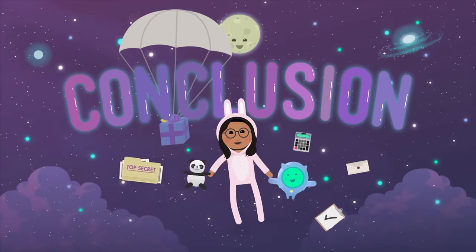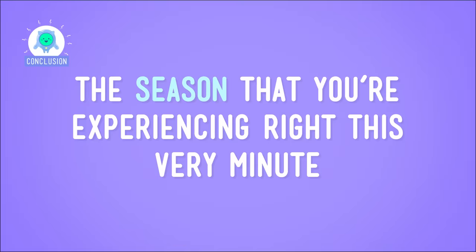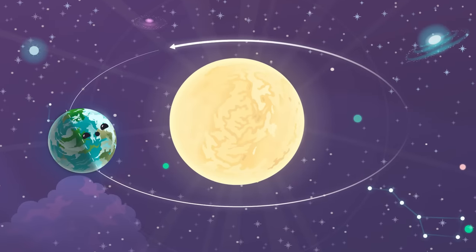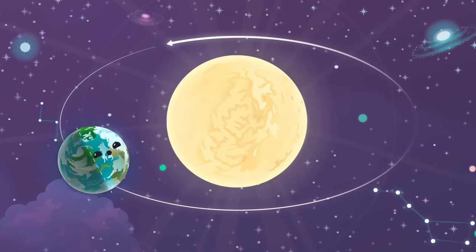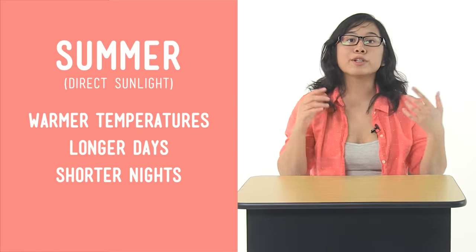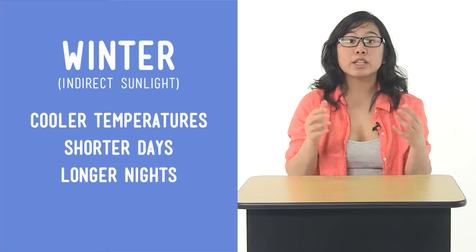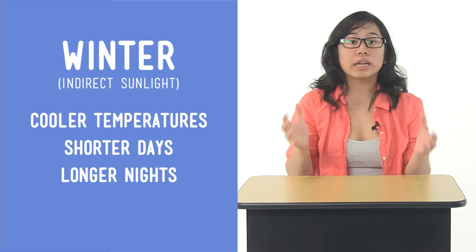Proof positive that something is going on here — and that something is this: the season you're experiencing right this very minute is caused in part by the amount of direct sunlight you're getting. Seasons are caused by the Earth's tilt on its axis as it cruises around the sun in its orbit. When one hemisphere gets more direct sunlight, it's summer there: temperatures are warmer, days are longer, and nights are shorter. And when it gets more indirect sunlight, it's winter: temperatures are cooler, days are shorter, and nights are longer. And now you know what causes summer, spring, autumn, and winter.